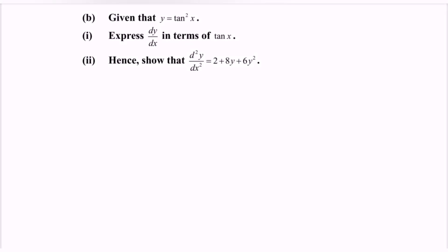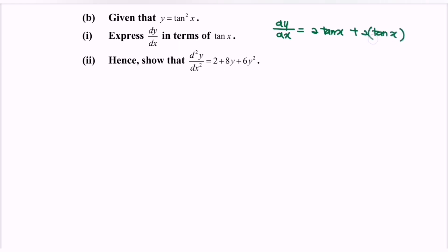Secondly, show that the second derivative equals 2 plus 8y plus 6y squared. As we know, dy/dx equals 2 tangent x plus 2 tangent x to the power of 3. Now what we have to do is differentiate this expression.